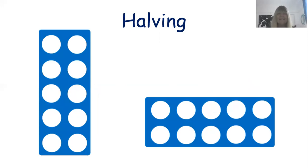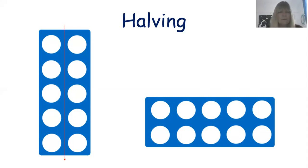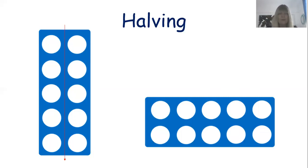Now we're looking at two ten-tiles. We're going to halve the first one vertically — down the middle from top to bottom. Counting one side: one, two, three, four, five. So I have to have five on the other side if I've halved this ten-tile. One, two, three, four, five. We have halved ten going from top to bottom and we've got five on each side. Half of ten is five.